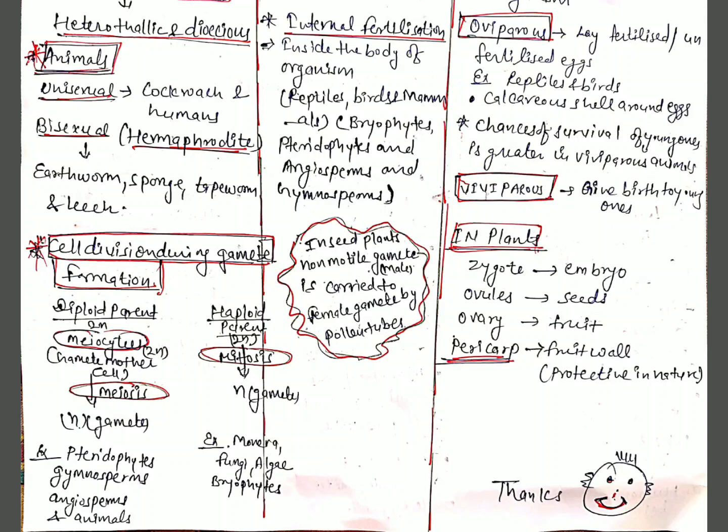Gametes are haploid, though the parent plant body from which they arise may be either haploid or diploid. If a haploid parent produces gametes, it will be through mitosis. If a diploid parent is there, the meiocytes or gamete mother cells undergo meiosis to produce haploid gametes. Examples where diploid parents form gametes through meiosis: pteridophytes, gymnosperms, angiosperms, and animals. Examples where haploid parents produce haploid gametes through mitosis: monera, fungi, algae, and bryophytes.